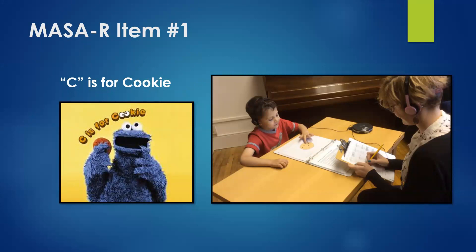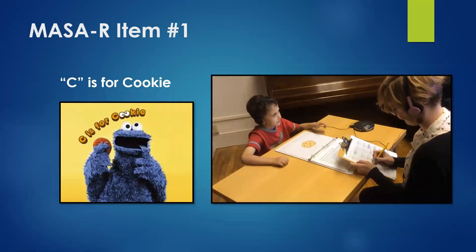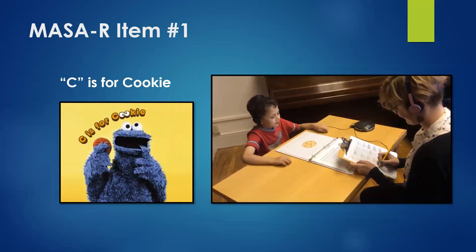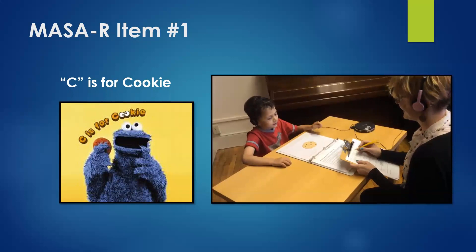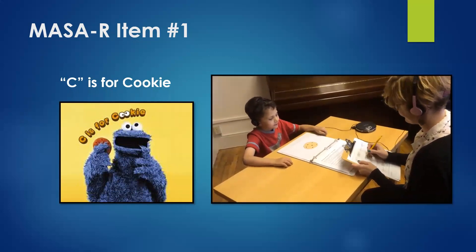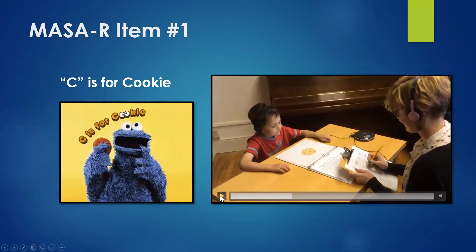For MASA-R item one, the popular song 'C is for Cookie' is used. The child is tasked with listening to Cookie Monster sing, and every time Cookie Monster says or sings the word 'cookie,' the child is directed to point at the cookie on the visual aid. We'll watch a short non-clinical video of what the field testing looked like.